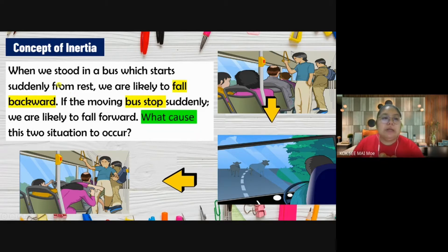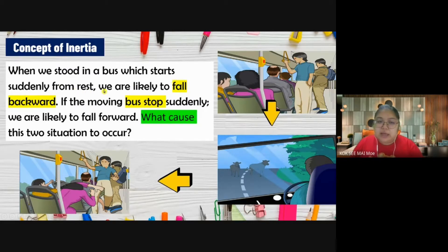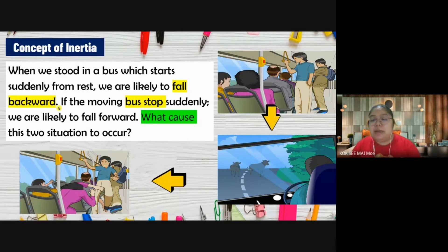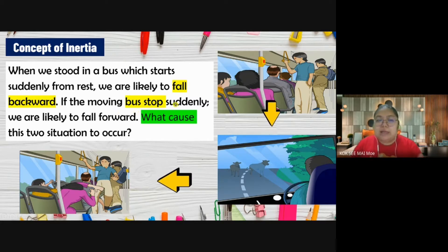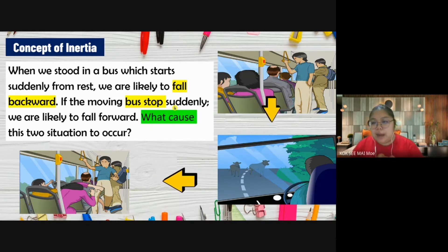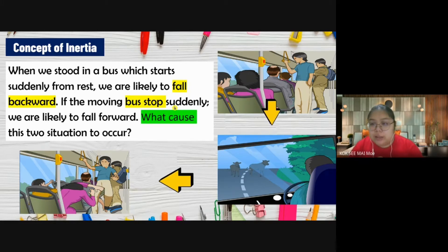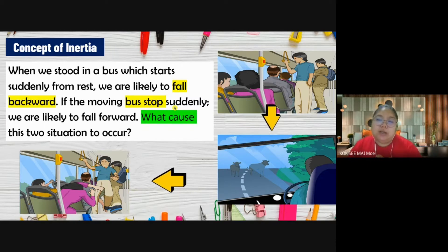When we stand in the bus and it suddenly starts from rest, we are likely to fall backward. That means when you are stationary and the bus suddenly starts to move, you are not ready, so you go backward - opposite the direction of the bus. If a moving bus suddenly stops, you continue moving forward because your body cannot stop immediately.